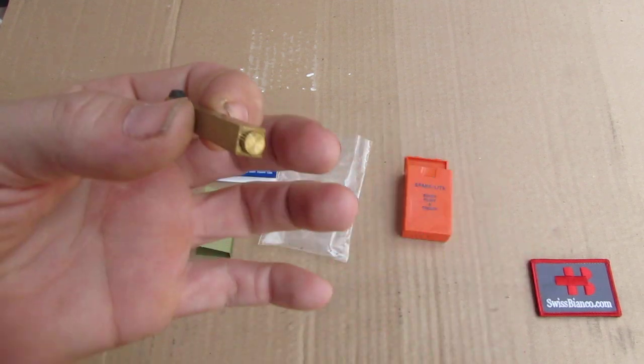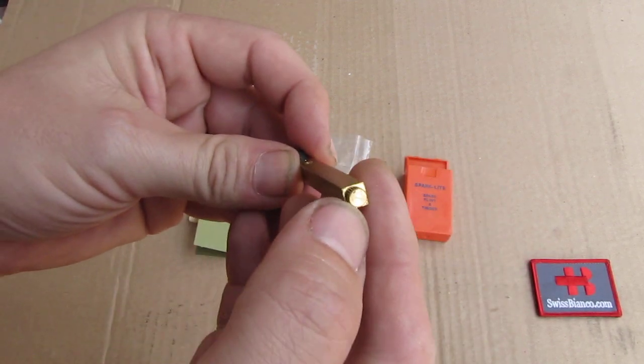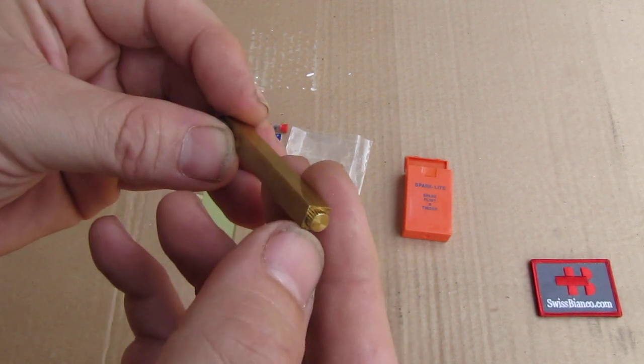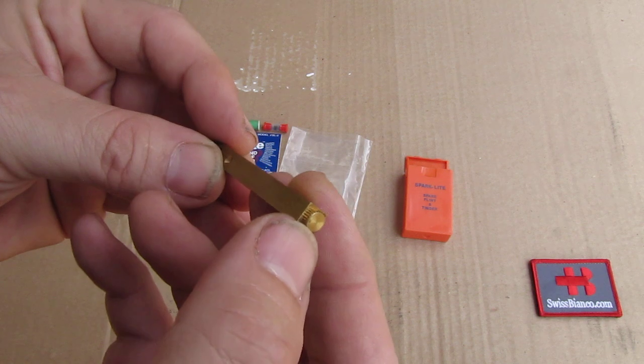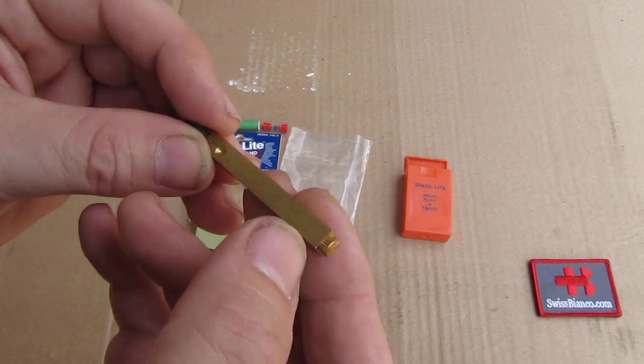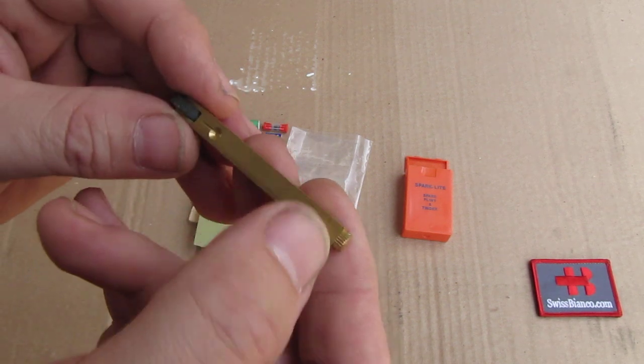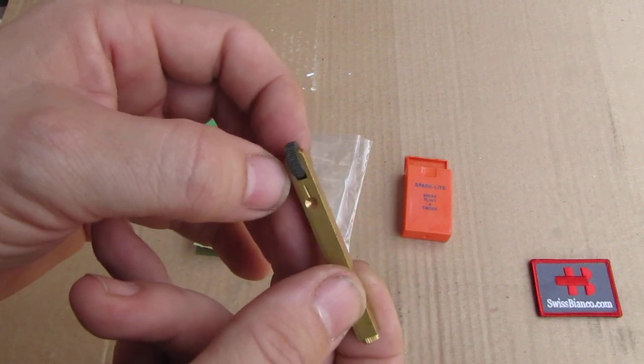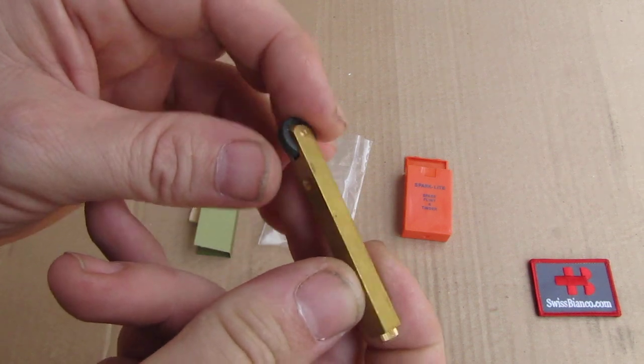So we have on the back side that part here that is screwed on. It's basically like the end cap of a screw. You take that off and inside you have the spring and the flints that push the flint all the way to the sparking wheel there.